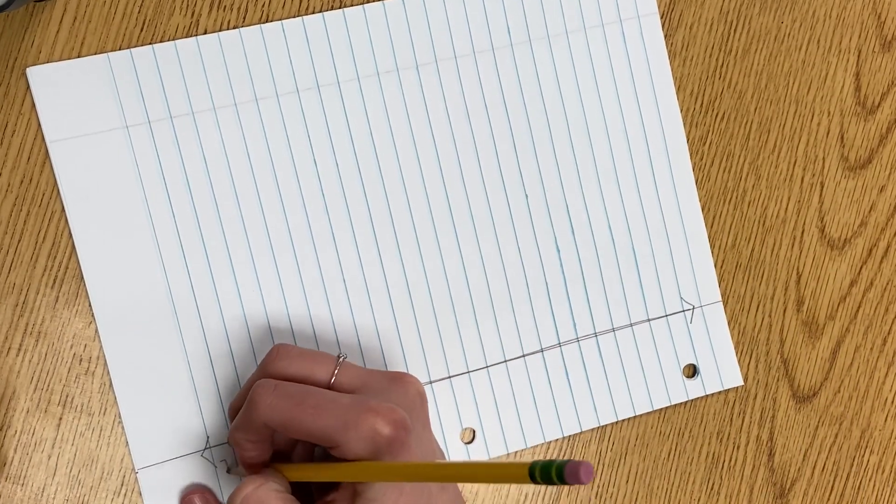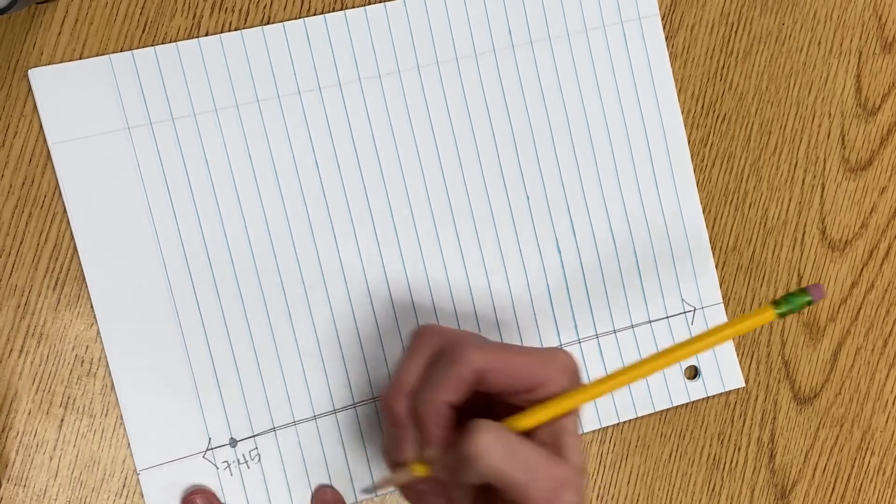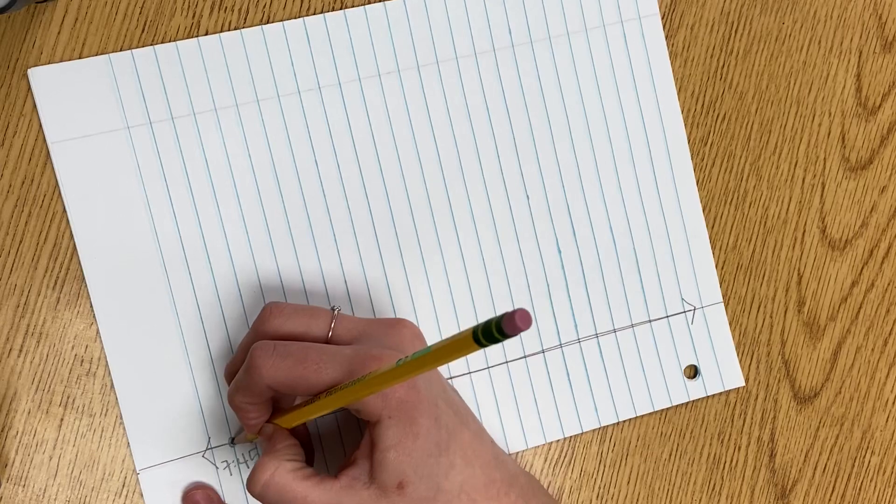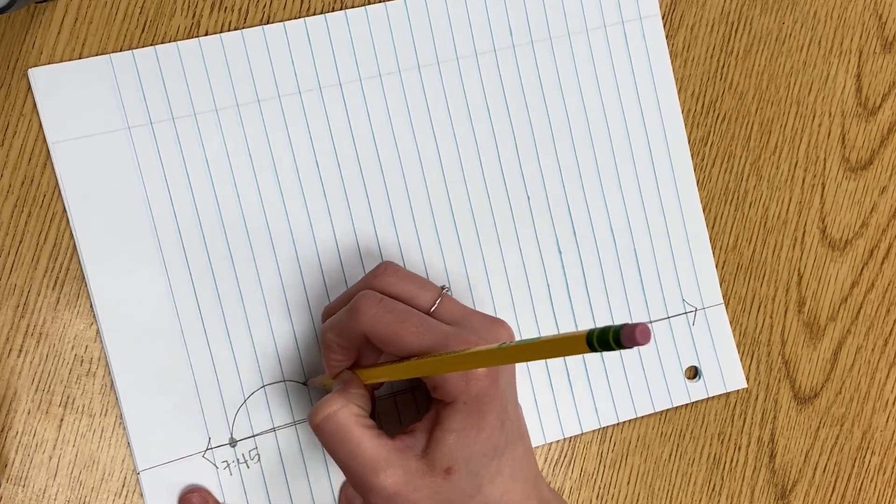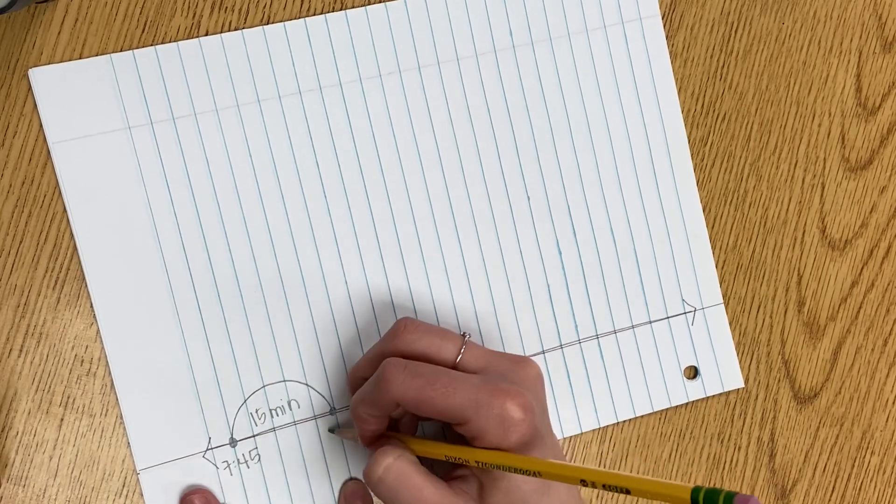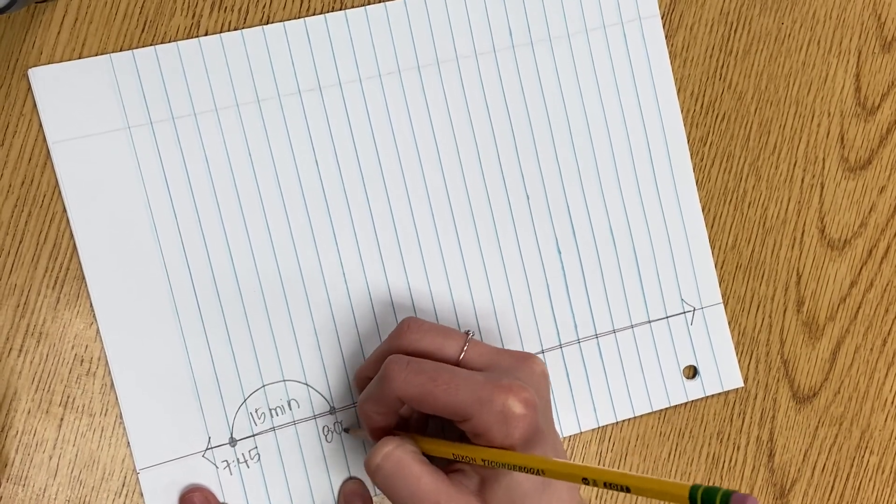I'm going to label my start time 7:45 when she arrived at school and I want to move to the next hour. So from 7:45, I need to add 15 minutes to get to the next hour, which would be 8 o'clock.